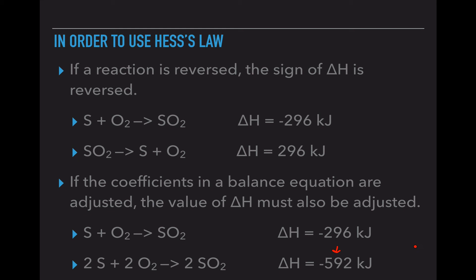So these are the things that you have to know before the next video. If you reverse the arrow, you must reverse the sign of delta H. If you multiply by a coefficient, you must also multiply the delta H by the same value.